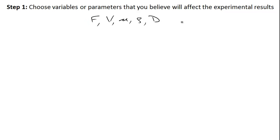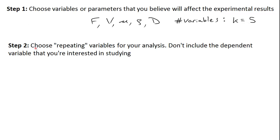You count up the number of variables that you believe would affect the experimental results. This number of variables we call k. In this case k is equal to 5 because we have 5 variables. The second step is to choose what are known as repeating variables for the analysis. When you select these variables, don't include the dependent variable — in this case, the force of drag. So let's choose the diameter of the sphere, the velocity of the fluid, and the fluid density as our repeating variables.